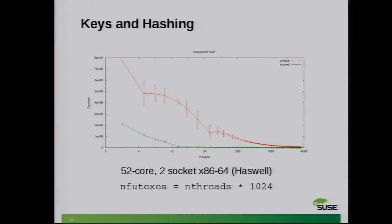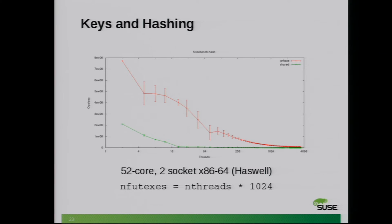In this case, it's an experiment just with the amount of hashing that can be done on a 52-core machine with two sockets. Each thread count operates on basically 1,000 futexes. Once you start using more threads than physical cores available, things start going bad. But if you're not at that point, you can notice that the overhead of hashing is a lot less pronounced for private futexes than for shared futexes. So private futexes will obviously hash a lot more in a given time.